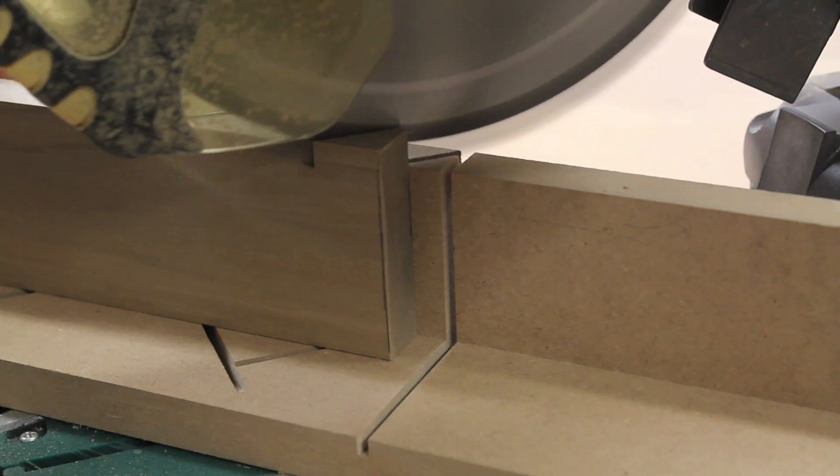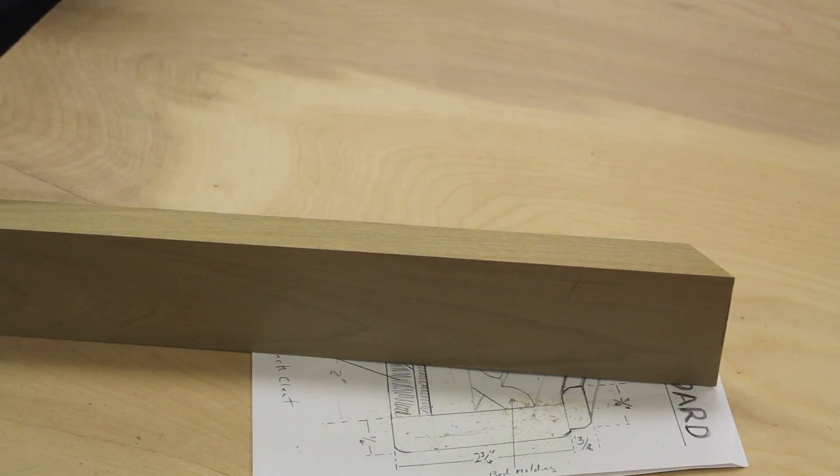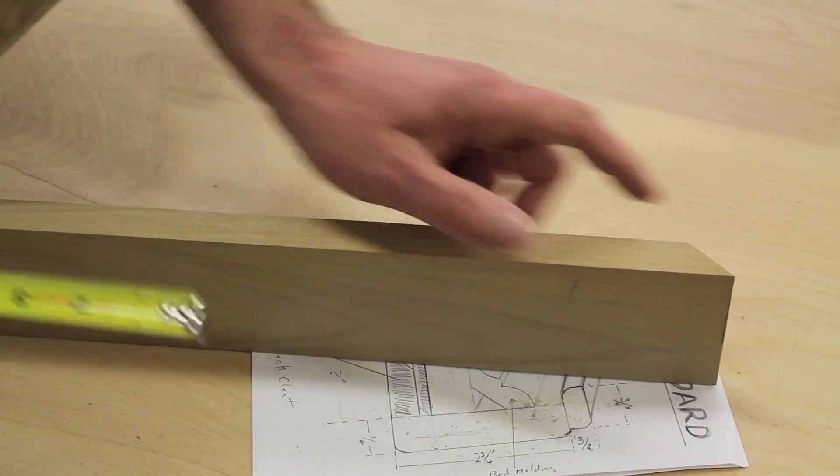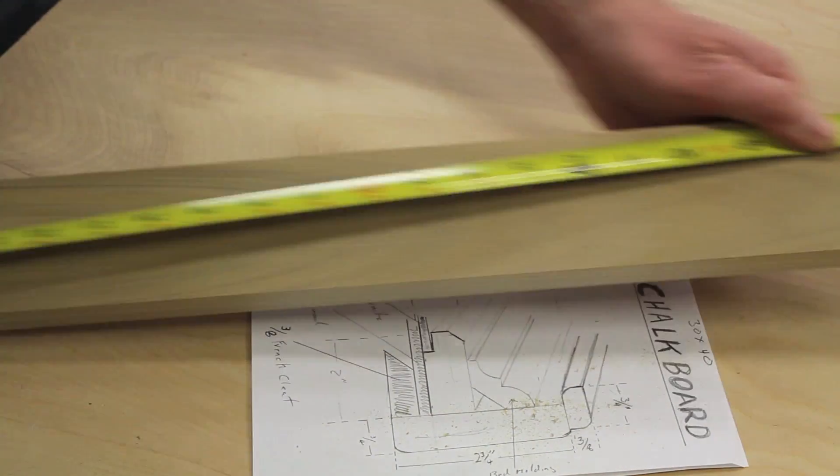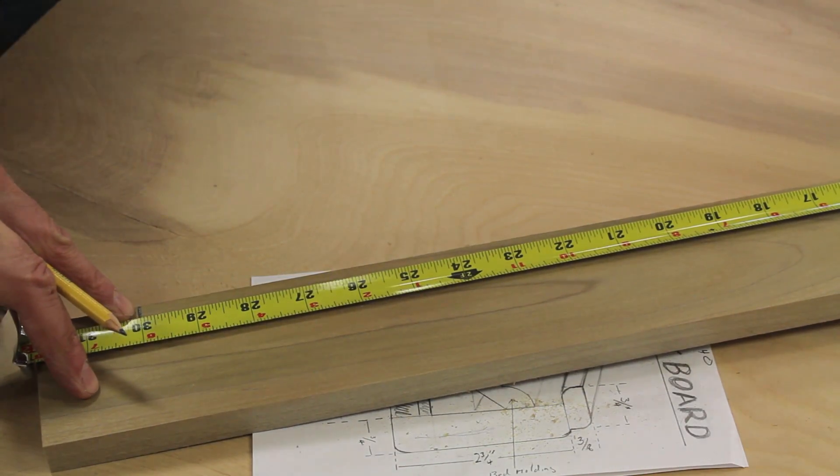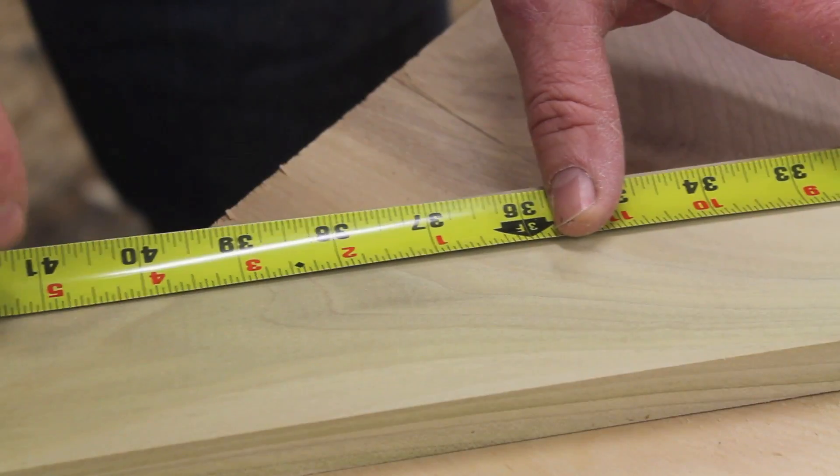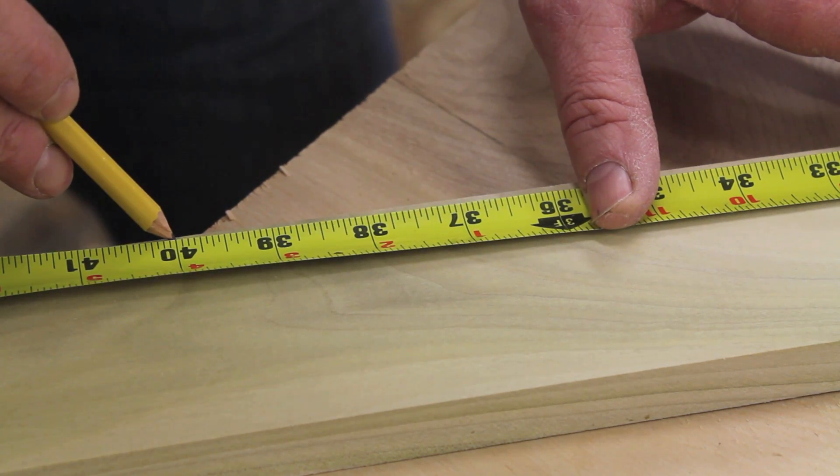I'm going to start by building the outside of the frame. I want the outside of the frame to measure 30 by 40 inches, so I've cut a miter in one end of the board and then I'll pull from the long point of the miter. You can see I've already put a mark at 30 inches, and then just do the same thing for the 40 inch cut.